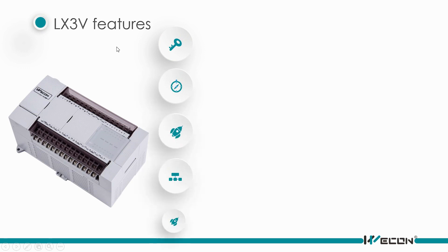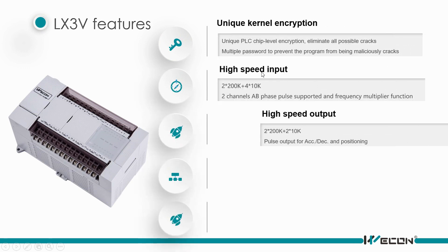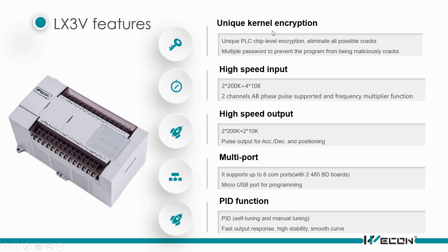Here are the features of the 3V. First, it has a unique kernel architecture and high-speed input and output. For the high-speed input, it can support two AB-phase encoders. For COM ports, with two extra 485BD ports it can support up to 6 COM ports. There's also a micro-USB port for programming, download, and uploading. And all models can support a PRD function.